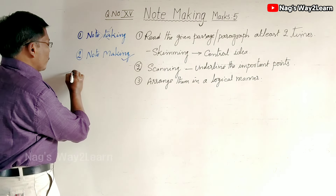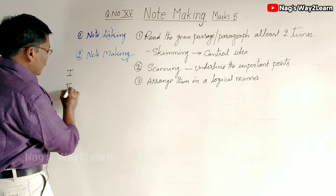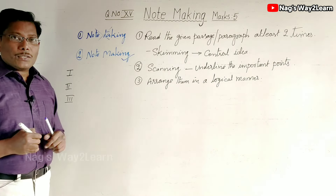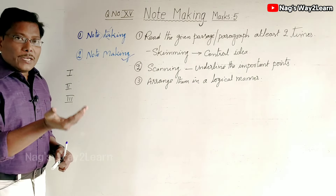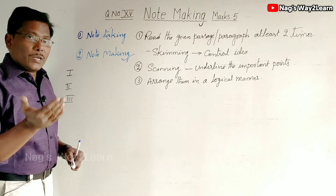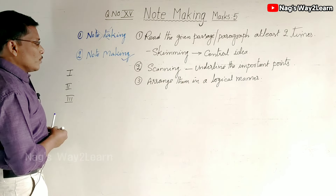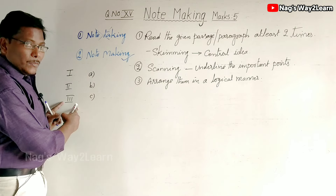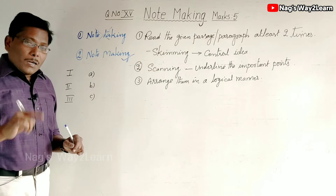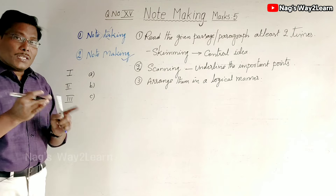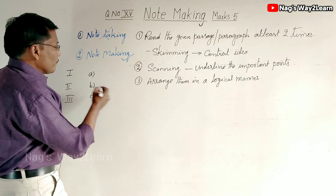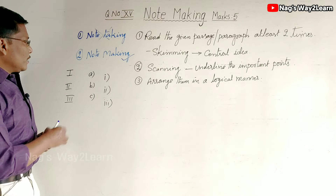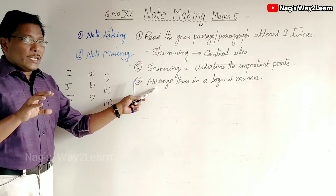We can write the main points using Roman numbers — Roman numerals I, II, III for the main headings. Sometimes in the main points there are sub-points, so for those sub-headings you give small letters a, b, c. And sometimes within the sub-points, you can find sub-sub-points — for those you use small Roman numerals. So: capital Roman for main points, small letters for sub-points, and small Romans for sub-sub-points.